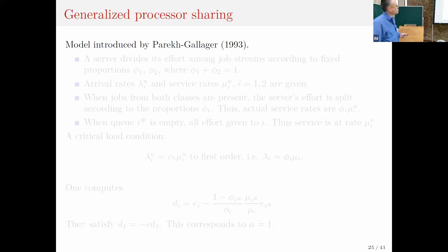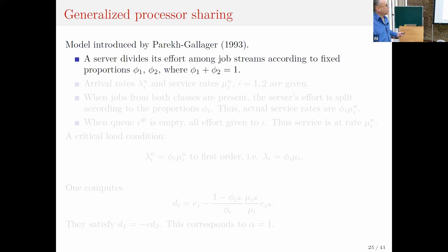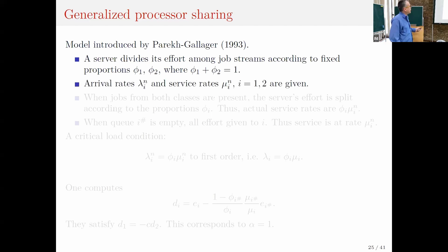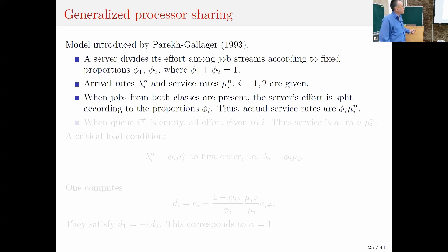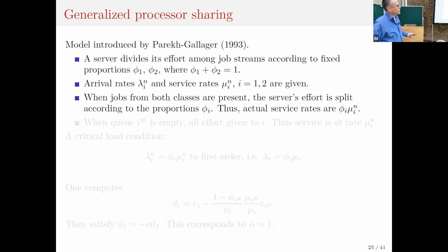Let me apply it to two queuing models. First, generalized processor sharing (GPS), introduced by Parekh and Gallagher, where a server divides its effort among job streams according to fixed proportions phi_1, phi_2 summing to one. There are arrival rates lambda_{n,i} and service rates mu_{n,i}. When jobs from both classes are present, the server effort is split according to these proportions, giving actual service rate phi_i * mu_{n,i}. But when one of the queues is empty, all server effort goes to the class present, giving service rate mu_{n,i}.